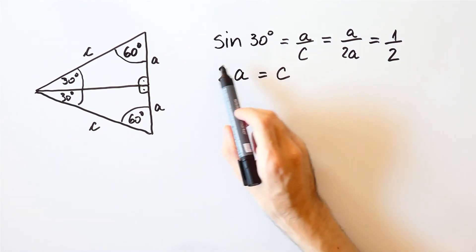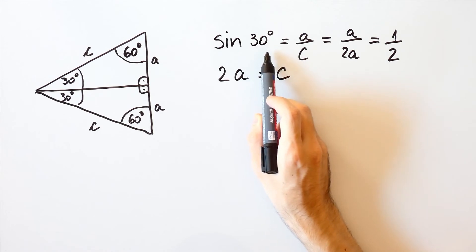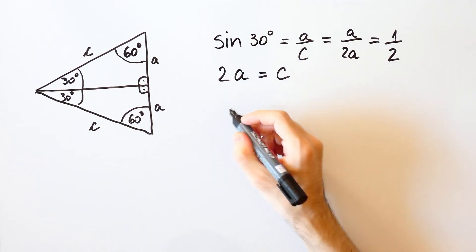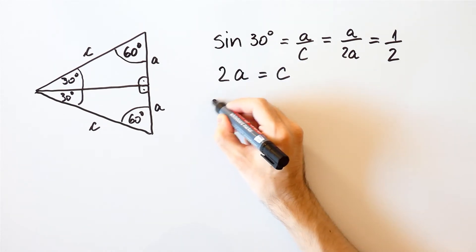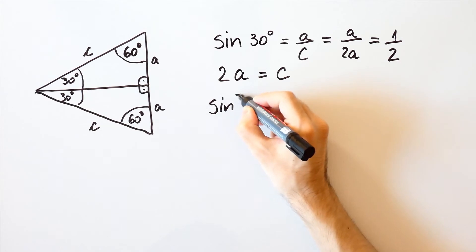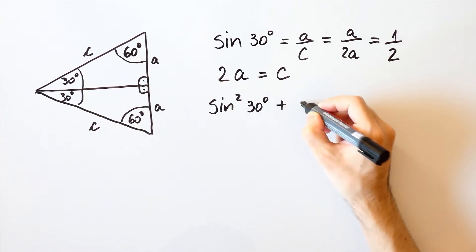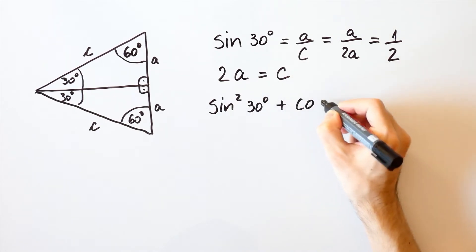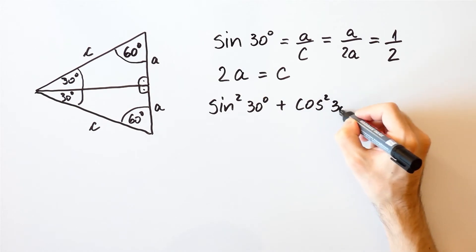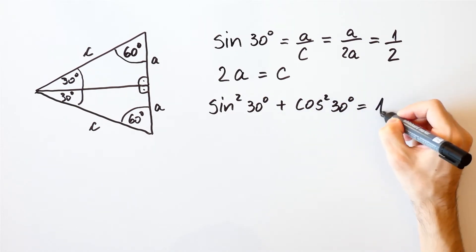And now that we know what is the sine of 30 degrees, we can calculate the cosine, because the sine squared of 30 degrees plus the cosine squared of 30 degrees is equal to 1.